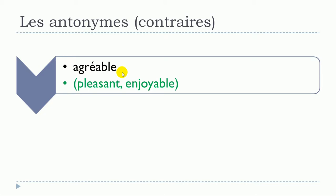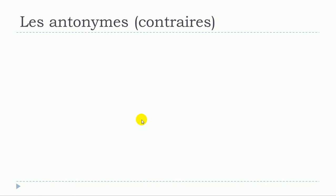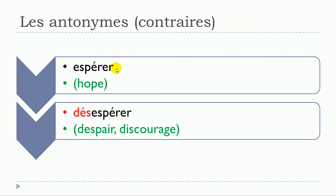The first example is agréable, which gives us désagréable. Then the adjective espéré gives us désespéré — so espéré becomes désespéré.